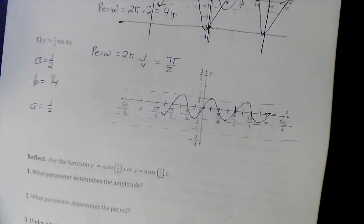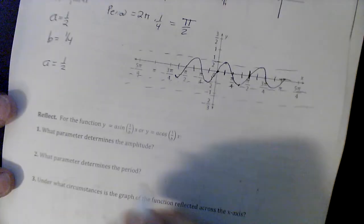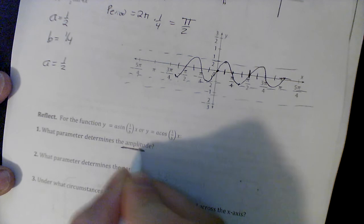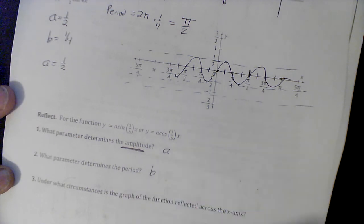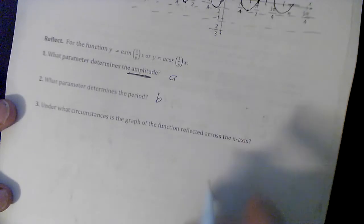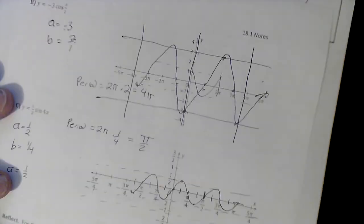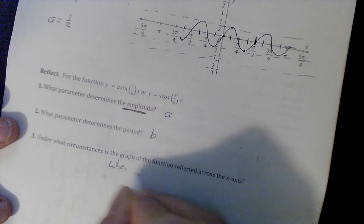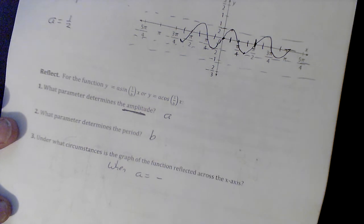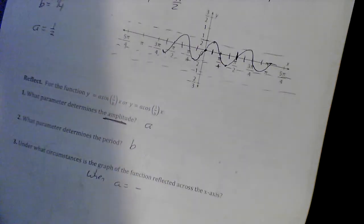What's the parameter that determines amplitude? That would be a. What's the parameter that determines period? That would be b. Under what circumstances is the graph reflected? We can see that one up here - it's when a equals a negative number. That's it, done. I will see you guys soon.